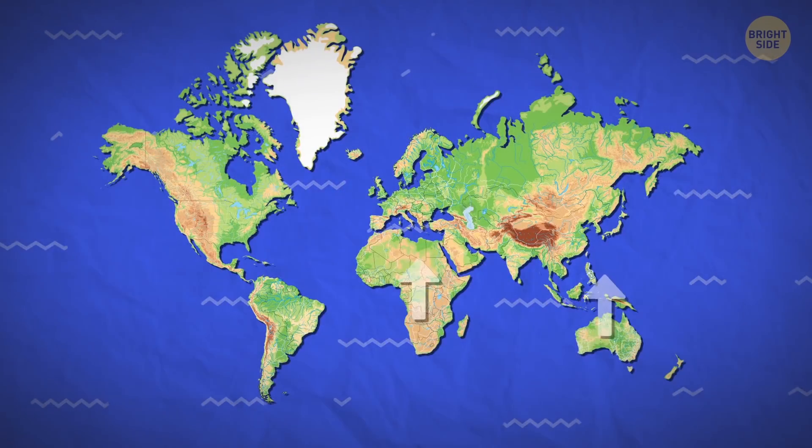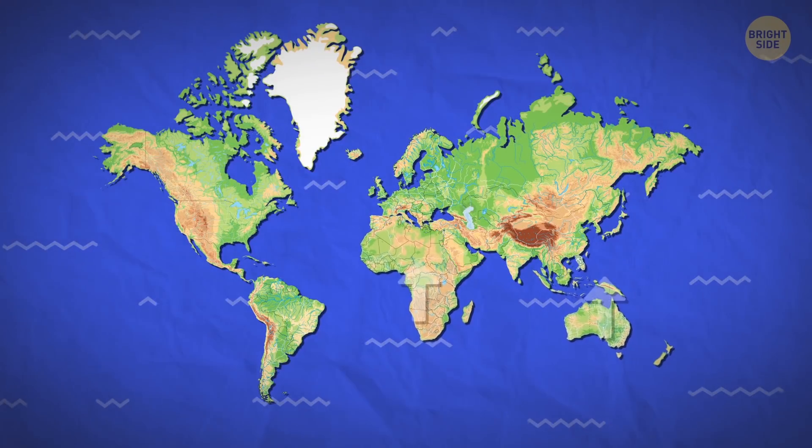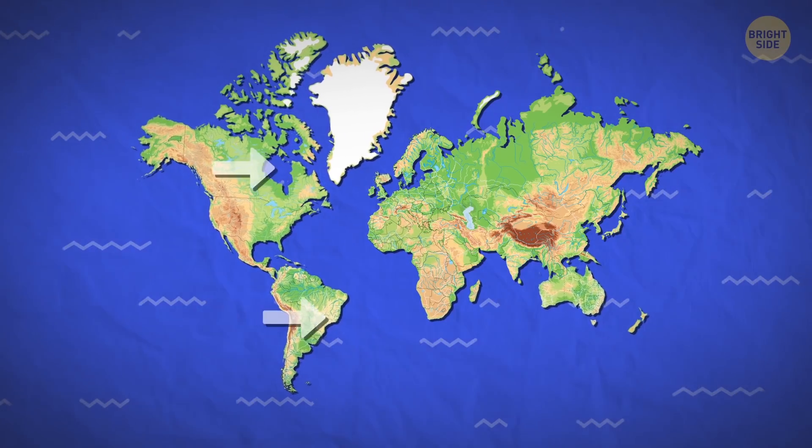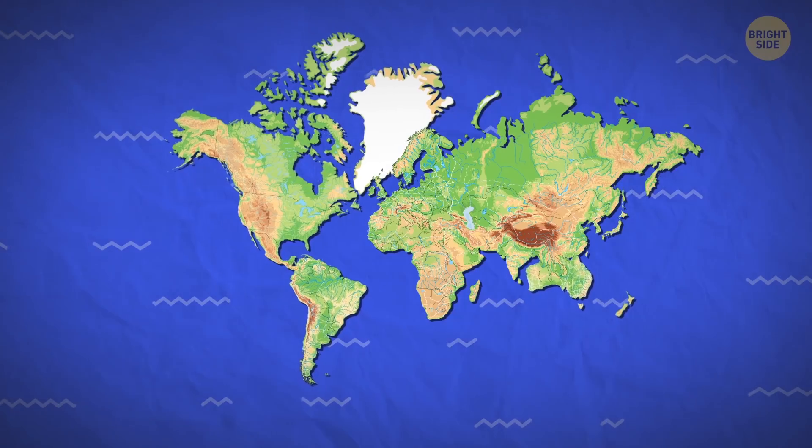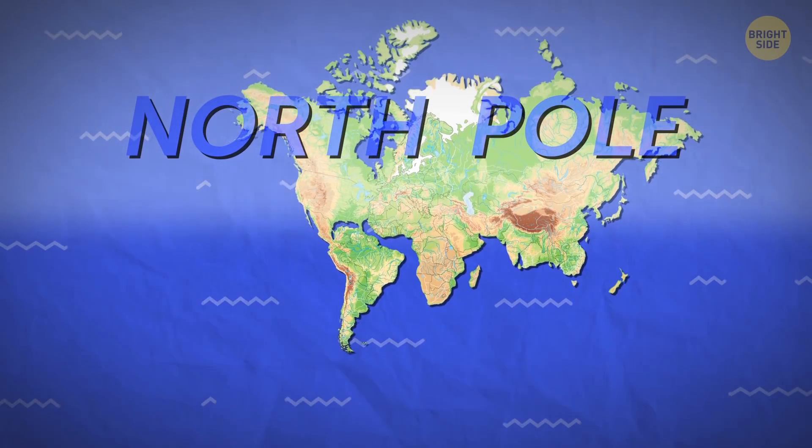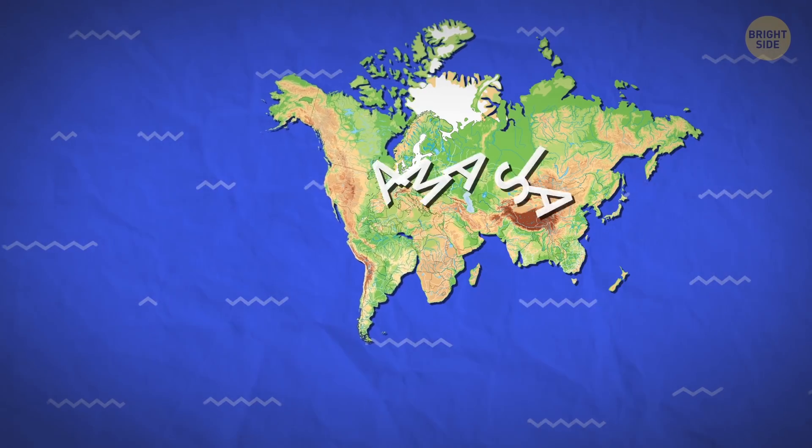Right now, the tectonic plates are moving north, which includes Australia and Africa. It is estimated that in a few hundred million years, all the landmasses, excluding Antarctica, will connect in the North Pole to form the Amasia.